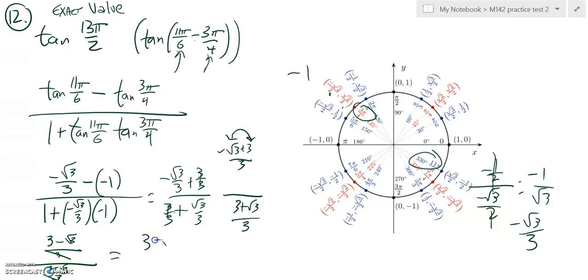So I have 3 minus root 3 over 3 plus root 3. All right, I still have a problem. I cannot leave those radicals in the denominator. So I need to get this root 3 out of here. And the way I'm going to do that is multiply by the conjugate of that. So 3 minus root 3. And I'm actually multiplying by 1. Not changing the value of this, just changing the form.